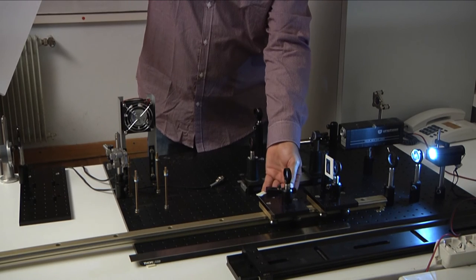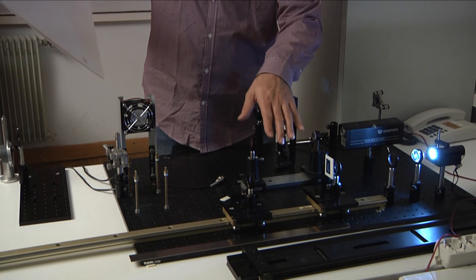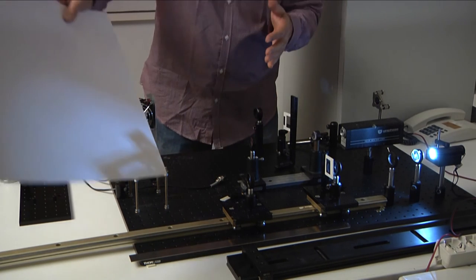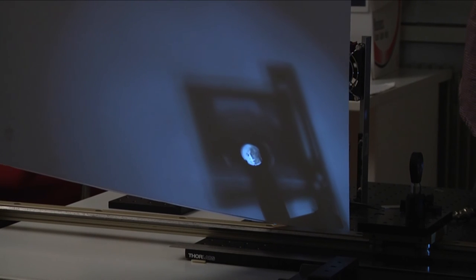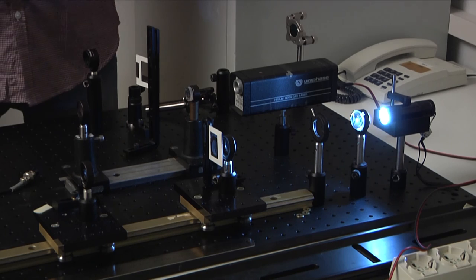But if we place the lens at twice the focal length, in this case 20 cm, we will have a very good image here, again at 20 cm with the same size and with the same magnification as the lens maker equation says.